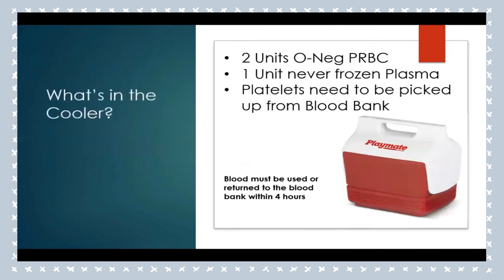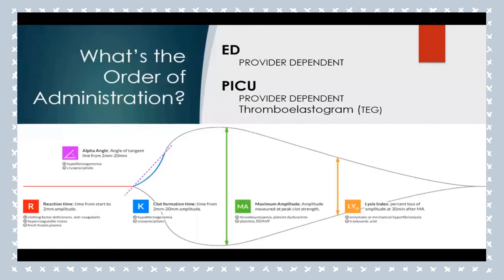What is in the cooler? Two units of O negative packed cells, one unit of never-frozen plasma, and platelets from the blood bank if needed. The order of administration is provider-dependent in the ED — most often starting with packed cells — and also based on the thromboelastogram in the PICU. Concerning conditions with massive transfusion include transfusion-associated coagulopathies — giving packed cells dilutes clotting factors causing more bleeding, so give TXA. Hypocalcemia occurs because citrate in blood products binds calcium, so remind physicians to give calcium chloride after multiple units.